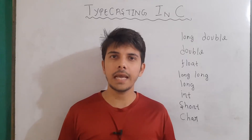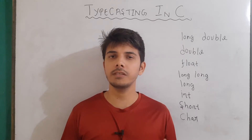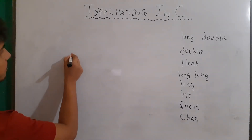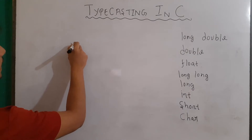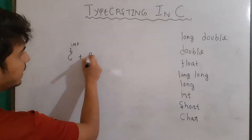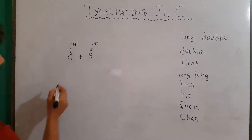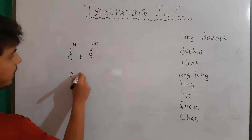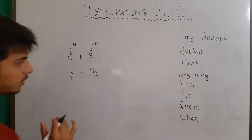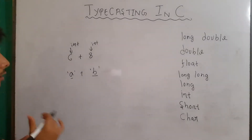Before diving into typecasting, one thing you should always remember is that operations are always performed between the same data type. For example, if there is a number 6 of integer type and I am performing addition with 8, then 8 will also be of integer type. Similarly, if there is a character A and I am performing addition with B, both operands must be of the same data type.